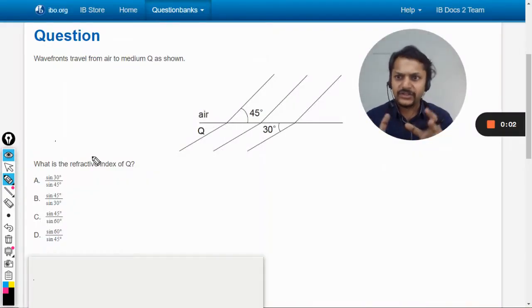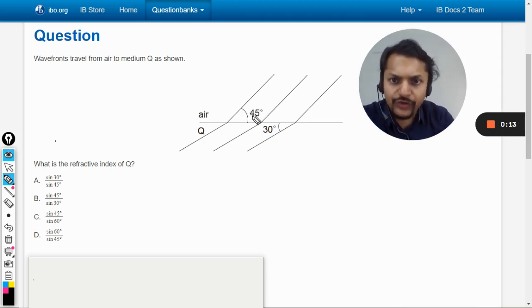Okay historians, let us see what is there in this question. Wavefronts travel from air to medium Q as shown. Okay, so these are the wavefronts that are traveling. These are not rays, so we have to draw the ray.